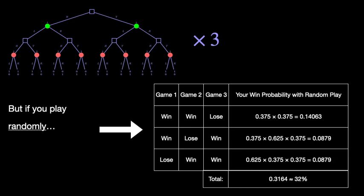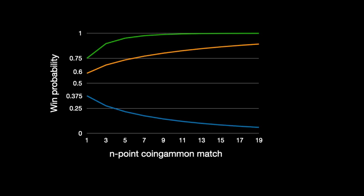However, if you play each game randomly, your winning probability decreases to below 32%. This graph shows your probability of winning the match for three initial values. On the x-axis, we have the length of the competition from 1-point to 19-point, which corresponds to the length of the matches in the World Backgammon Championship. Many backgammon competitions are organized into 9-point or 11-point matches.